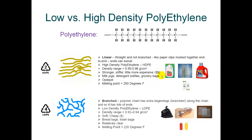High density polyethylene tends to be opaque instead of clear. Low density polyethylene tends to be clearer and softer. It's commonly used in bread bags, garbage bags, and Ziploc-type bags. It's also used in squeeze bottles because of the fact that it's very soft and containers are quite squeezable. Both are very cheap to manufacture and less dense than water.